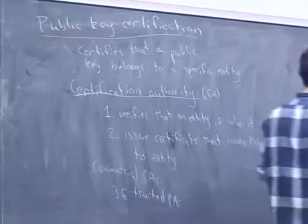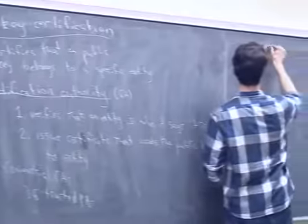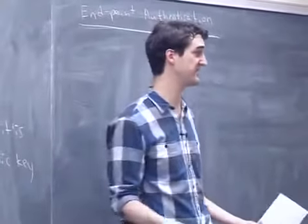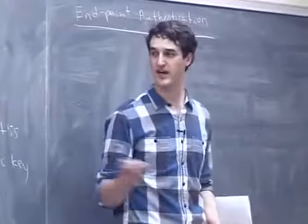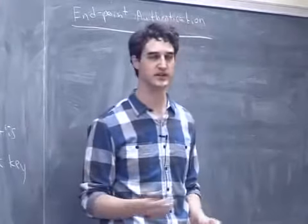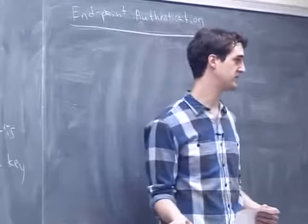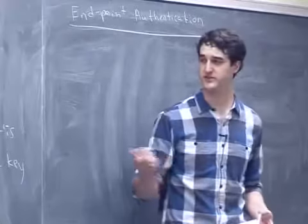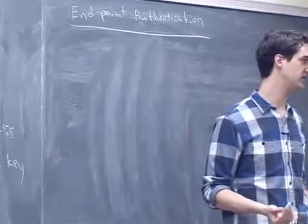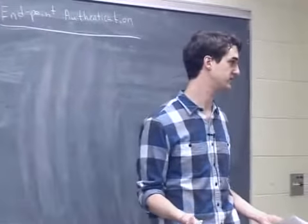The CA is the weakest link — it has to be trusted. If the CA itself is compromised or is an attacker, then the whole system fails. But there's no way around it — we have to trust someone. Let's move on to endpoint authentication.